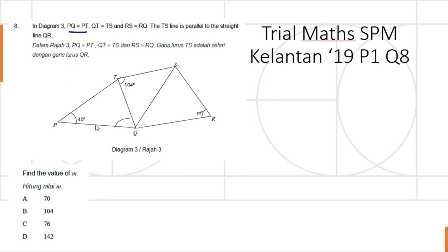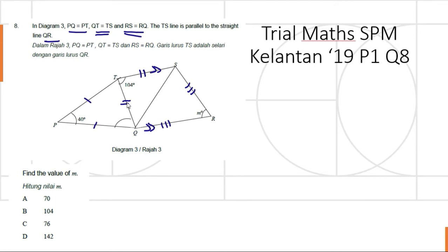PQ is equal to PT, QT is equal to TS, and RS is equal to RQ. TS is parallel to the straight line QR. So TS is parallel to QR. We wanted to find m.